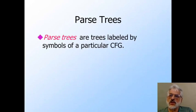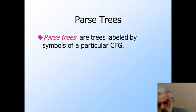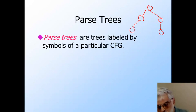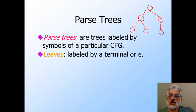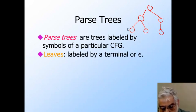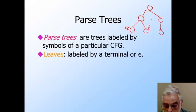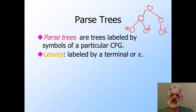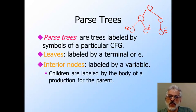Parse trees for a grammar G are trees whose nodes are each associated with a symbol of G. I'm going to draw a little tree here. Leaves are always labeled by either a terminal or by epsilon — for example, an A on one node, a terminal B on another, and perhaps epsilon on another. Interior nodes are labeled by a variable.